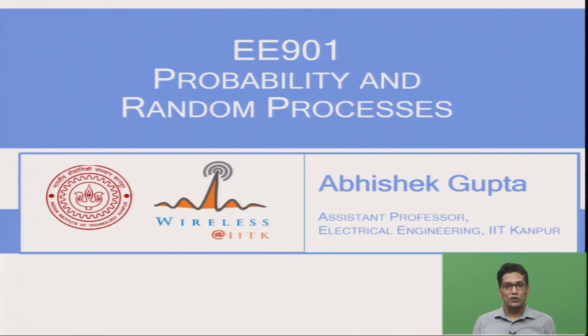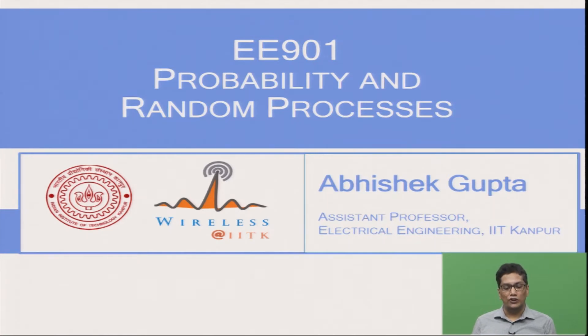Welcome to E901 Probability and Random Processes course. In the first lecture we are going to talk about the course content and objective along with a short introduction to probability theory.